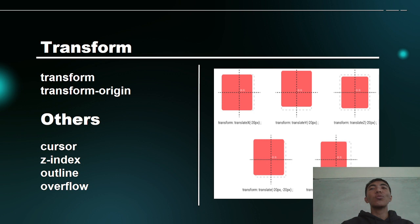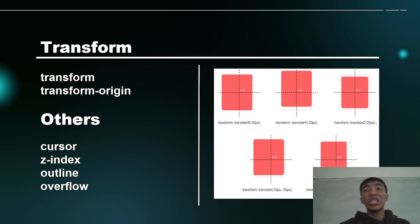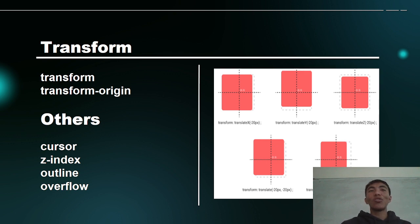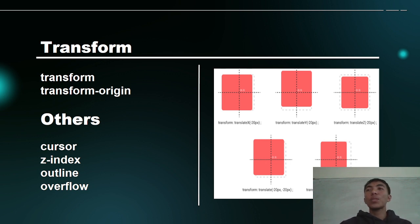What do we need to consider when it comes to transform? We need to consider: transform, transform-origin, cursor, z-index, outline, and overflow. In transform, we need to know the use of the x-axis, the y-axis, and the z-axis. It is very important to know the differences between x, y, and z-axis.